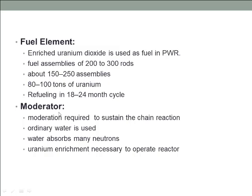The next component is the moderator, like that of the boiling water reactor. A moderator is required in the pressurized water reactor. Fast neutrons must be slowed down in order to interact with the nuclear fuel and sustain the chain reaction. Ordinary water is used as the neutron moderator, where neutrons collide with water molecules and lose their energy, converting fast neutrons to slow neutrons capable of producing fission reactions. Since water absorbs many neutrons, uranium enrichment becomes necessary to operate these reactors.